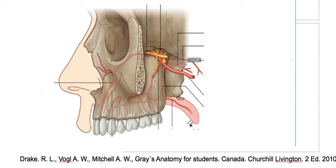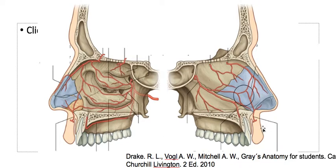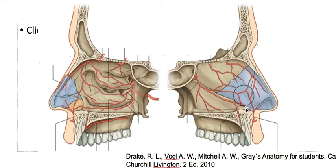Lastly, we have the labial artery, which is also a branch of the external carotid artery. Here we have the septal branch of the labial artery — the superior labial artery or lateral labial artery — and this is the lateral branch. The septal branch will anastomose with the sphenopalatine artery.